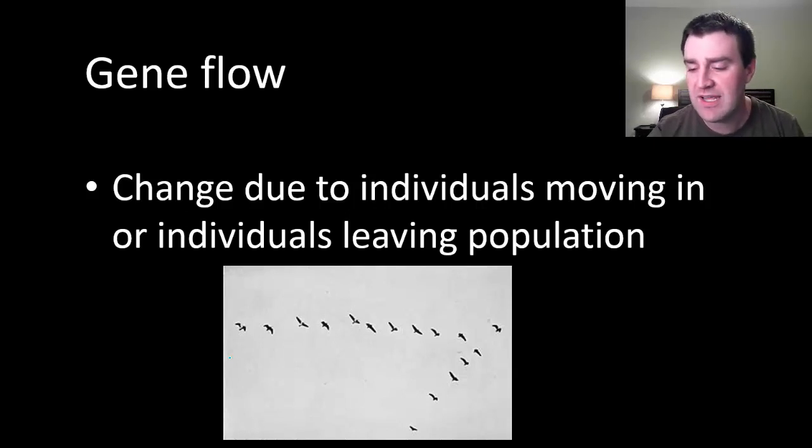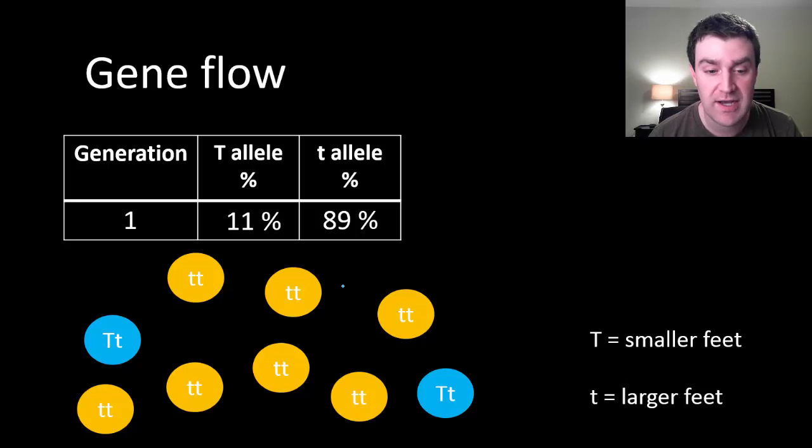This might be really important in migratory species, like for example two populations of the same species of bird that maybe live normally in different areas, but when they migrate south for the winter they kind of come to the same place and they reproduce with one another.